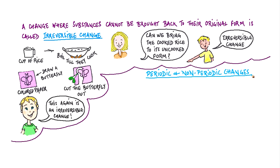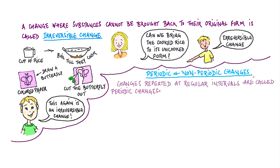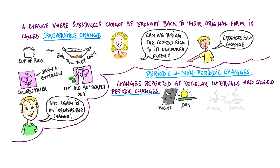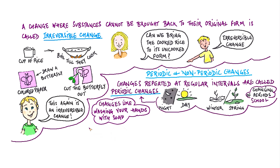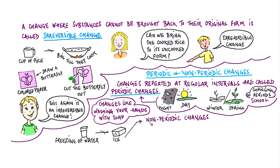Periodic and non-periodic changes. Some changes are repeated at regular intervals. These are called periodic changes. The dawning of the day after night, the coming of spring after winter, and even the changing of periods after a set time in your school — these are all periodic changes. Changes like washing your hands with soap or the freezing of water to make ice are non-periodic changes, as they do not take place repeatedly.